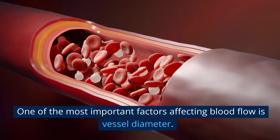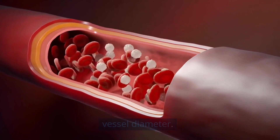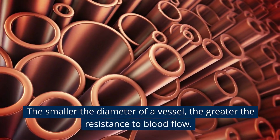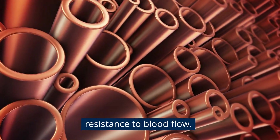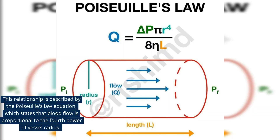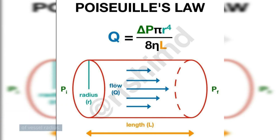One of the most important factors affecting blood flow is vessel diameter. The smaller the diameter of a vessel, the greater the resistance to blood flow. This relationship is described by Poiseuille's Law equation, which states that blood flow is proportional to the fourth power of vessel radius.